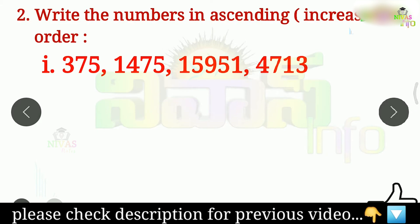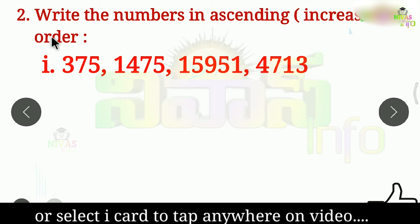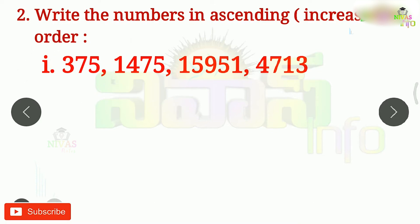If it is big, then there is a large number. If it is a small number, then there is a starting number. If you have a small number or a big number, you can add digits.